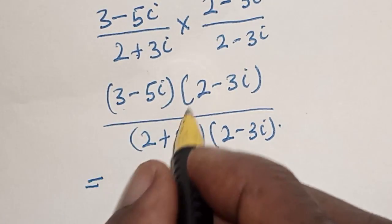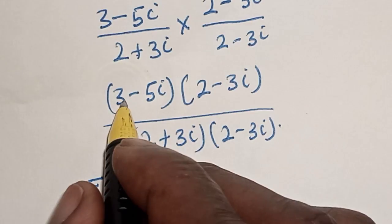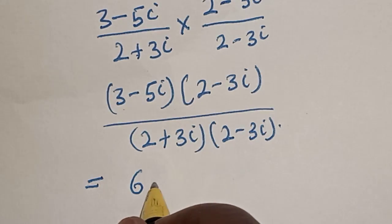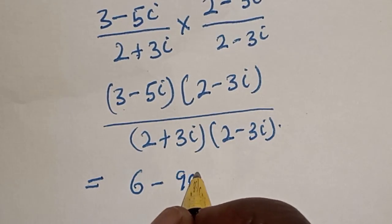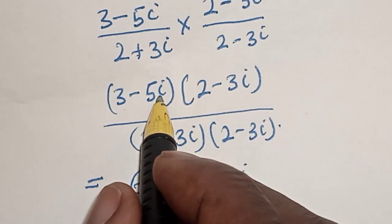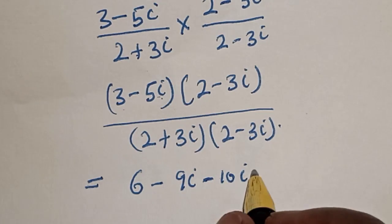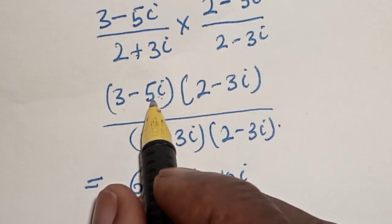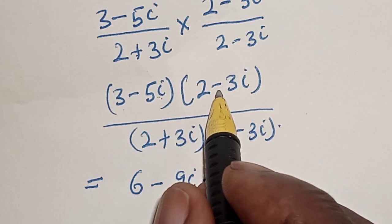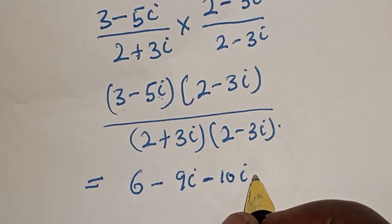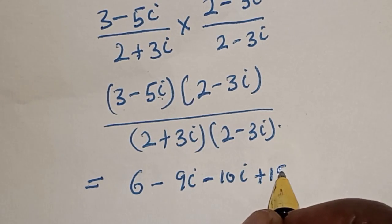Then, this is equal to 3 times 2, 6, then 3 times minus 3i. This is minus 9i minus 5i times 2. This is minus 10i. Then, this is minus 5i times minus 3i. This is plus 15i.